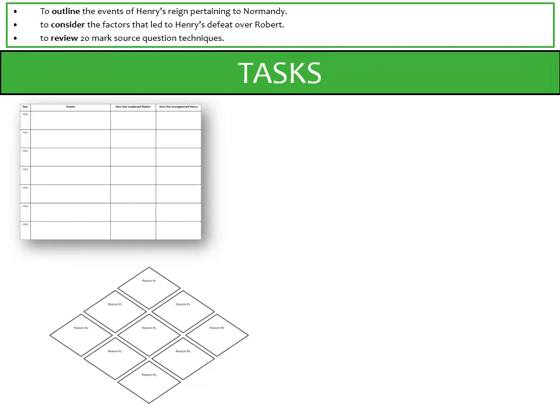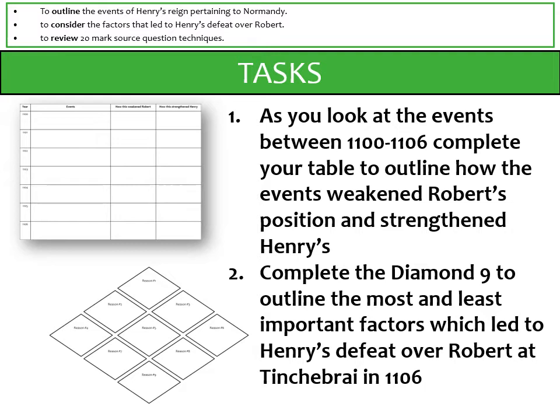The tasks for today are threefold. First, you're going to look at the events between 1100 and 1106 and complete the table I provided, recording events as I talk through them and thinking about how each weakens Robert and strengthens Henry. From that, you should be able to complete a diamond nine outlining the most and least important factors that led to Henry's defeat over Robert at Tinchebray in 1106.